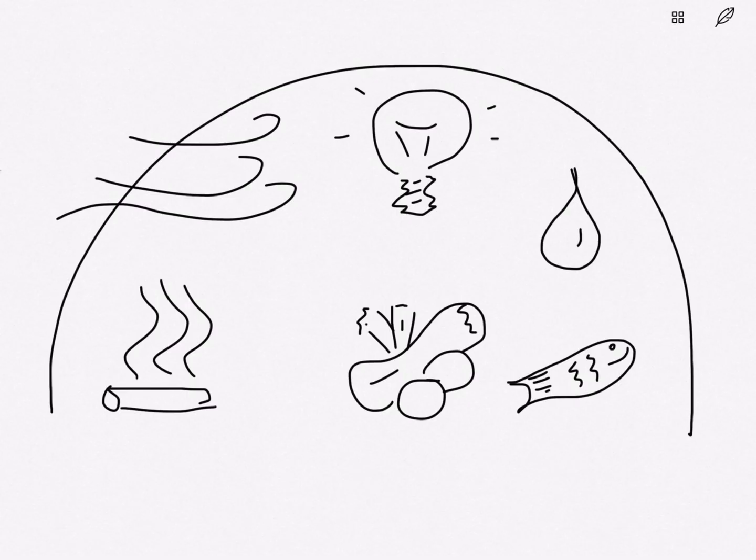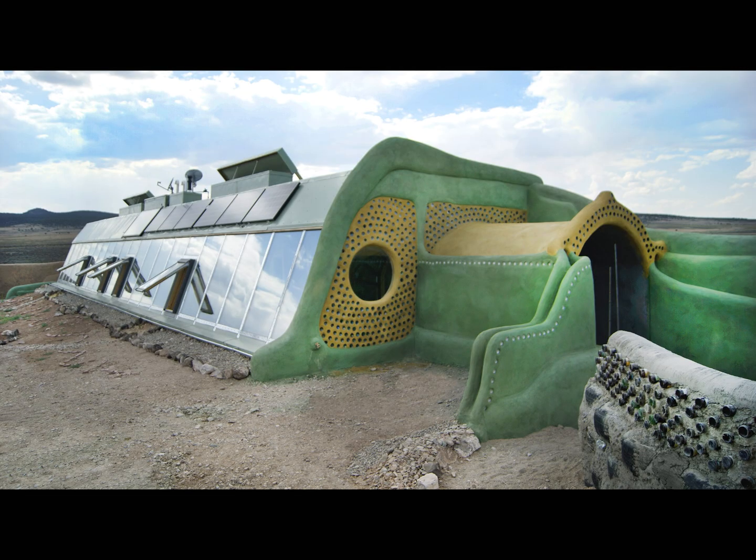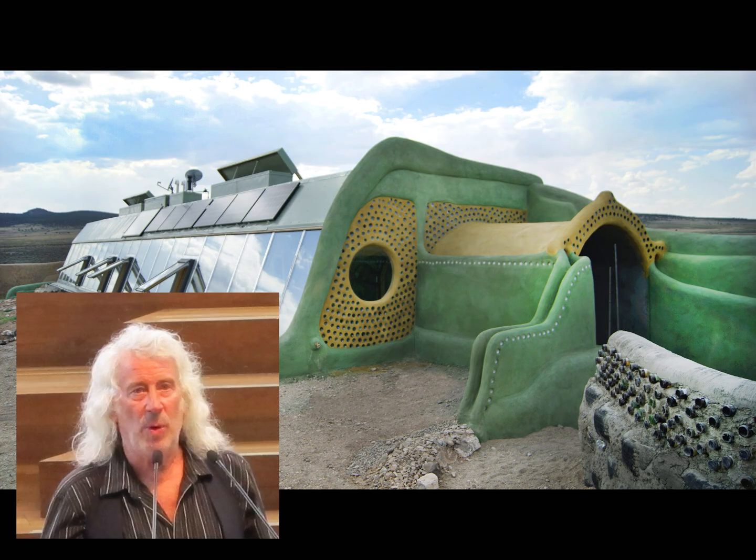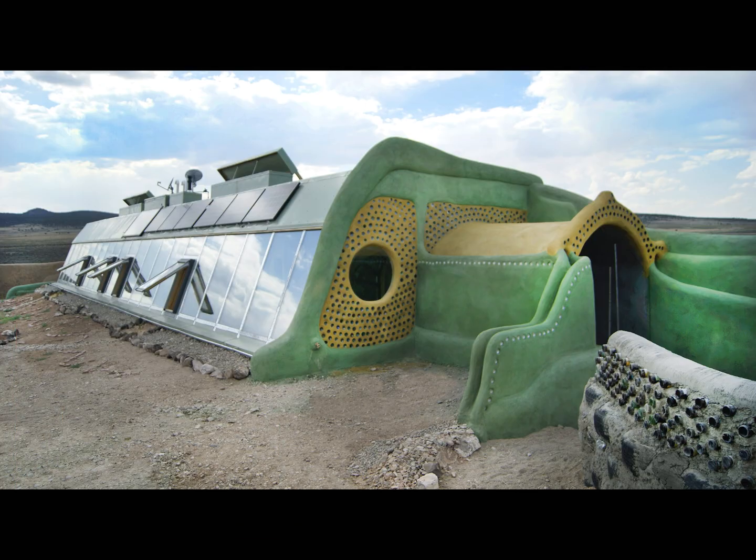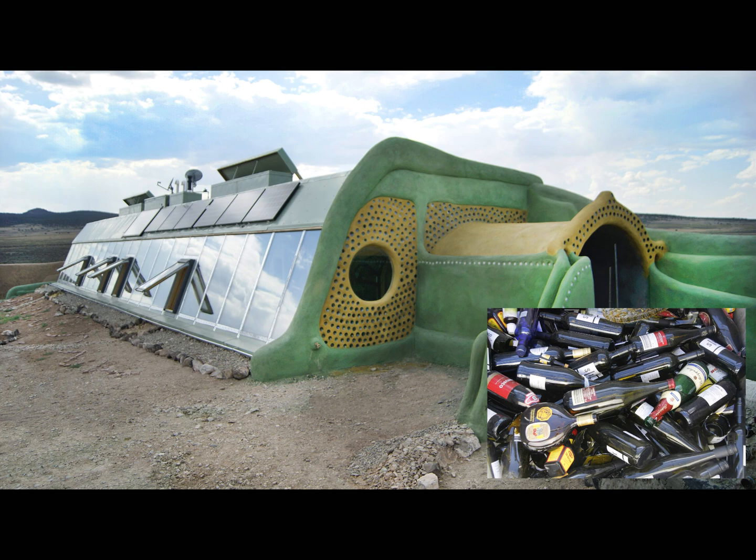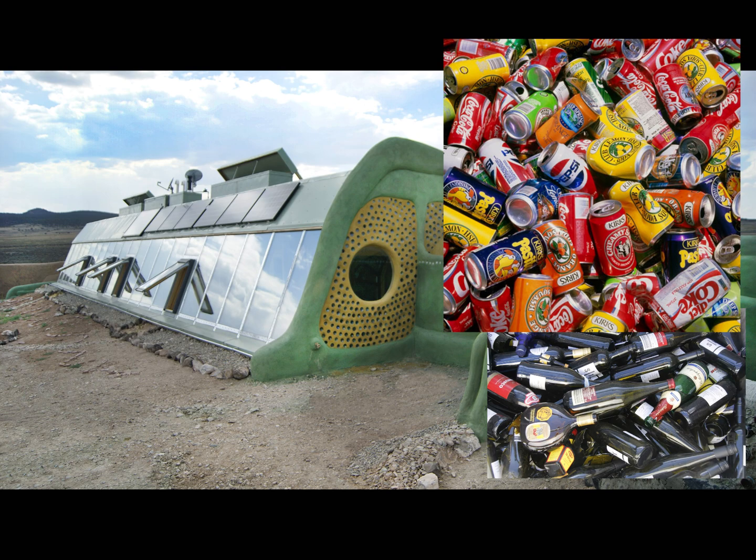We came up with all these points by looking at Earthships. So what's an Earthship? They are houses that were invented by Michael Reynolds in the 70s and they do two things. Firstly, they are very pleasant to live in and secondly, they make maximum use of materials that were considered waste, especially at the time.